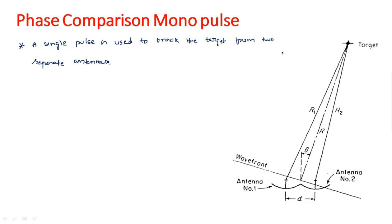Two separate antennas are used for single pulse transmission. Antenna number one is used to transmit one pulse, and antenna number two is also used to transmit another pulse. So two separate single pulses are being transmitted with the help of these two antennas. Remember, these two antennas are separated by a distance d.